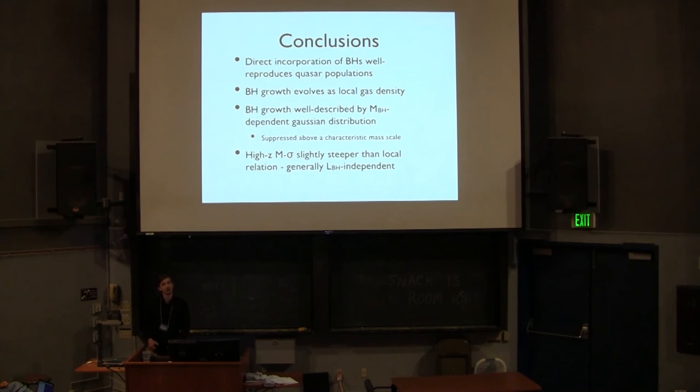So just to conclude, these very large simulations are able to reproduce the statistical populations of black holes that we're observing in the universe. We're able to grow the very massive, very early ones that have been observed. And that's accomplished through cold streams. The typical growth is statistically well characterized by a relatively simple model that only depends on the black hole mass and redshift. And the m sigma relation at high redshift appears to be very consistent with the local universe, but slightly steeper. And we should be able to make observations of that without worrying about luminosity cuts, simply because of the distribution of black hole luminosities as a function of mass. Thank you.